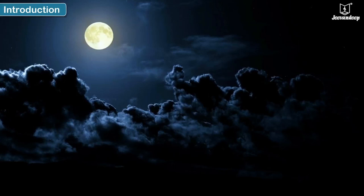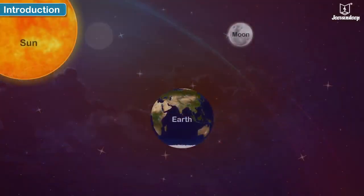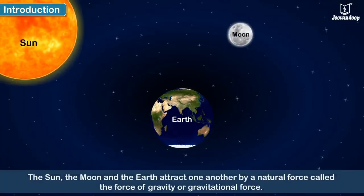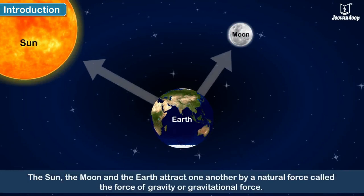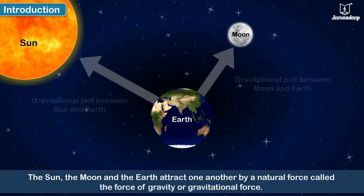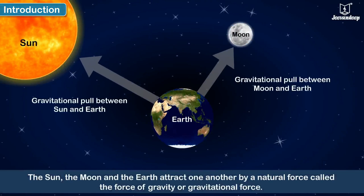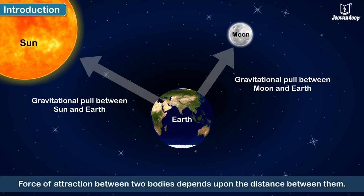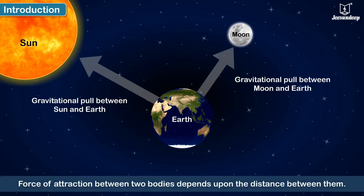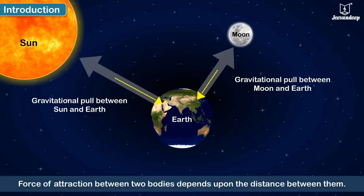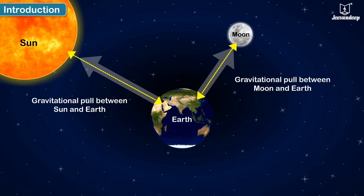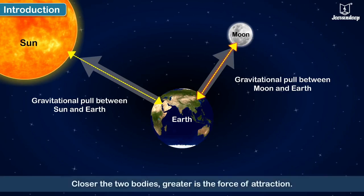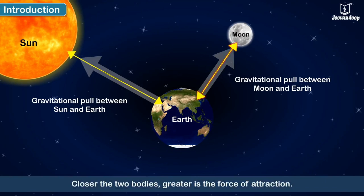A dark night looks beautiful when it is lit by moonlight. The Sun, the Moon and the Earth attract one another by a natural force called the force of gravity or gravitational force. This force of attraction between two bodies depends upon the distance between them — closer the two bodies, greater is the force of attraction.